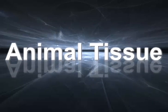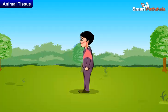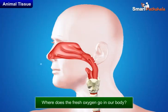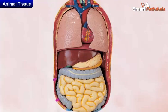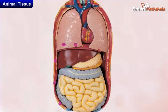Animal Tissue. When we go in the park and get fresh oxygen from plants, we actually feel the movement of our chest. Where does the fresh oxygen go in our body? It goes into our lungs and then is transported through all the body cells through blood, and the flow of blood carries various substances from one part of the body to the other.